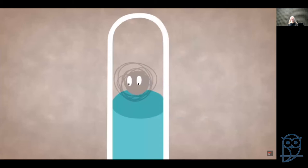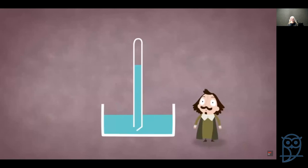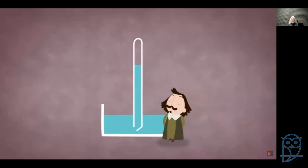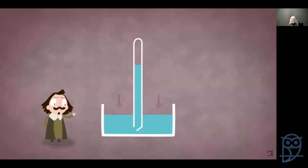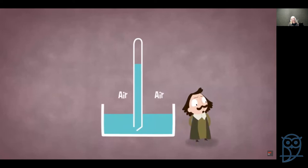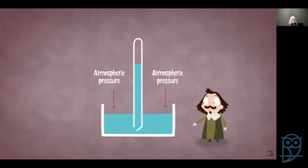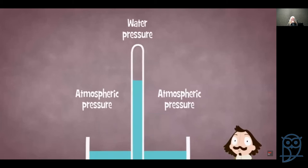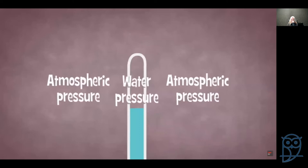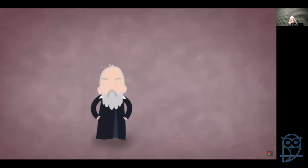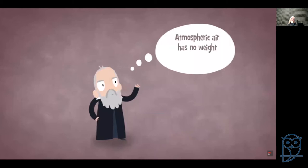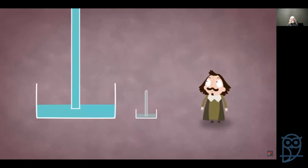The idea of a vacuum existing at all was still considered controversial, and the excitement over Galileo's theory led Gasparo Berti to conduct a simple but brilliant experiment. A long tube was filled with water and placed standing in a shallow pool with both ends plugged. The bottom end was then opened and water poured out until the level remaining in the tube was 10.3 meters. With a gap at the top and no air having entered, Berti had succeeded in directly creating a stable vacuum.